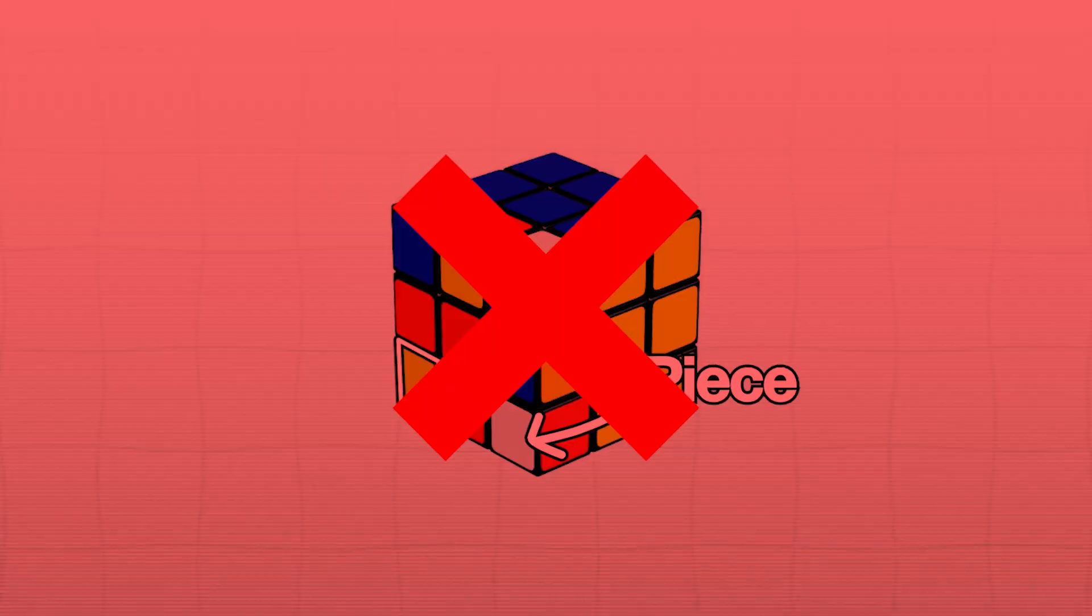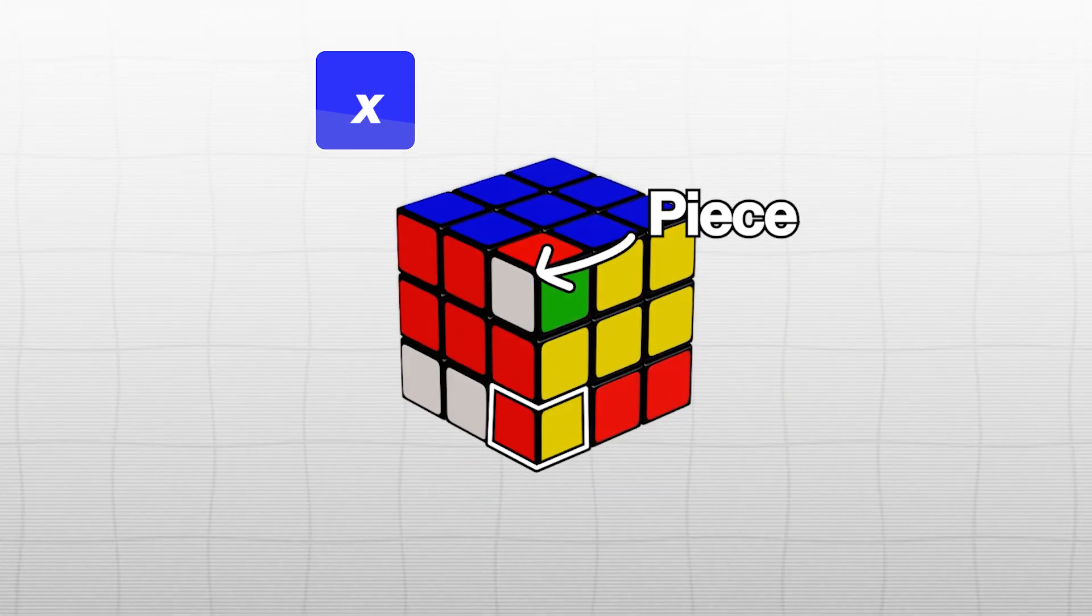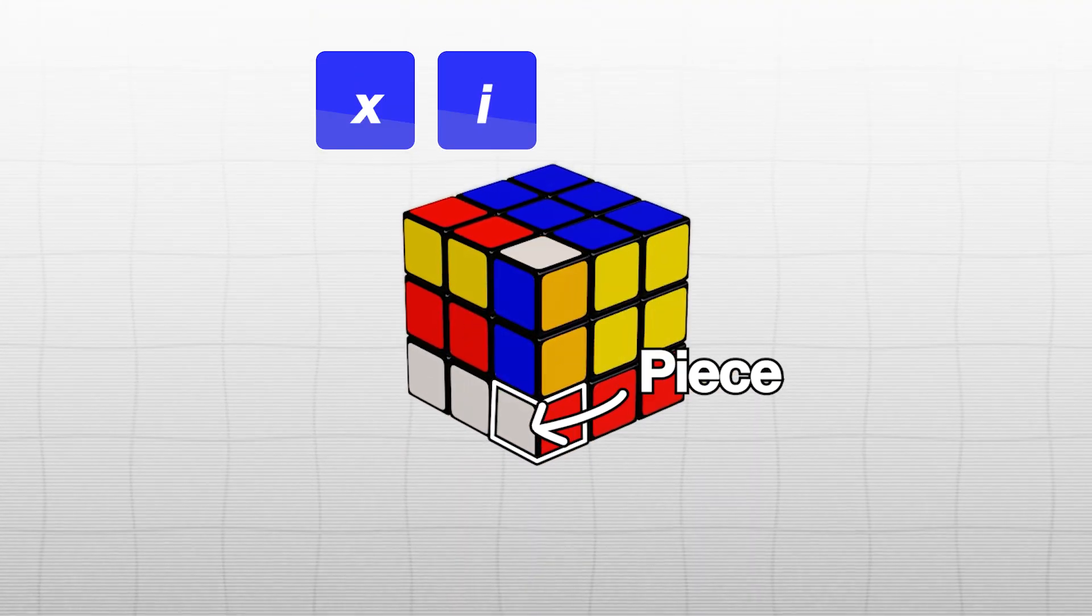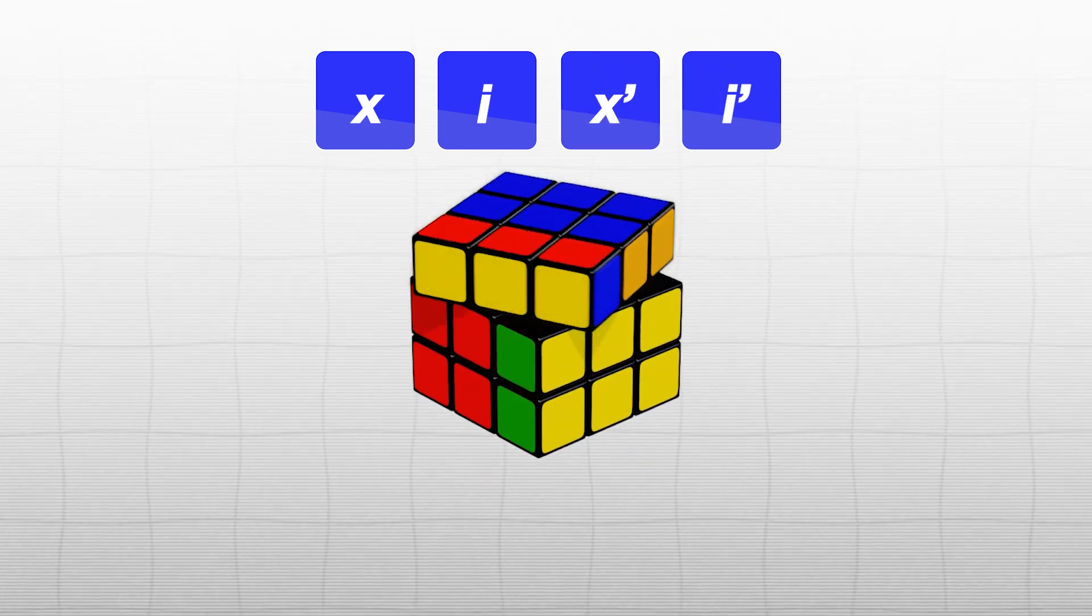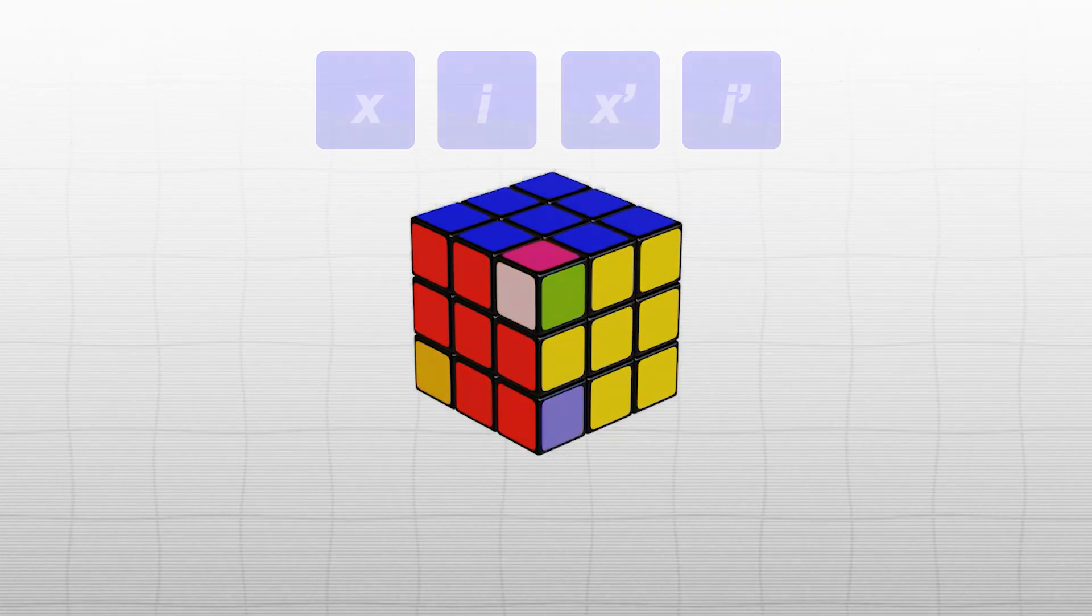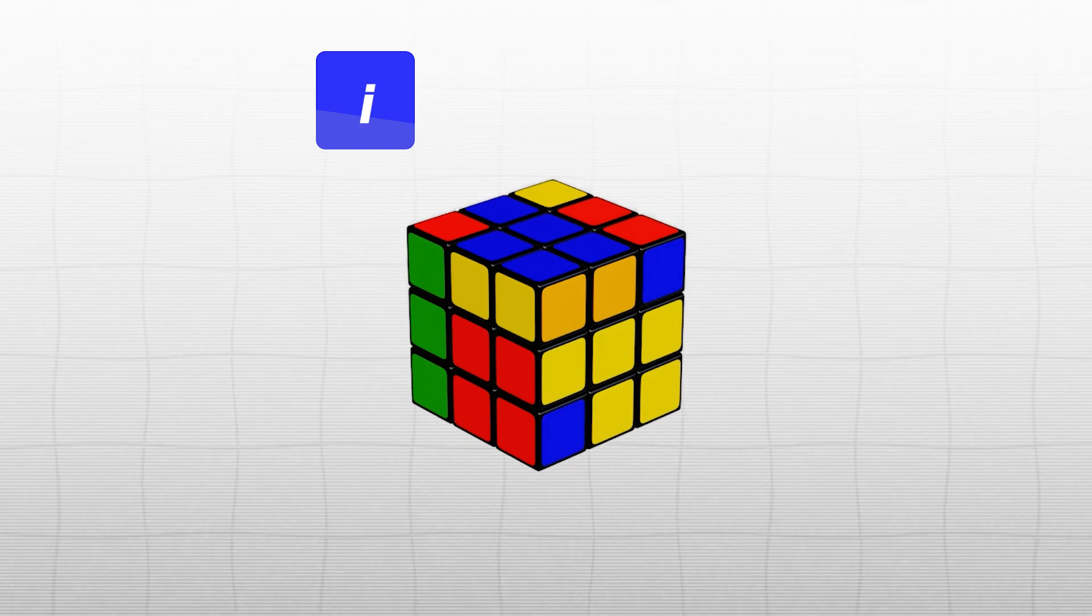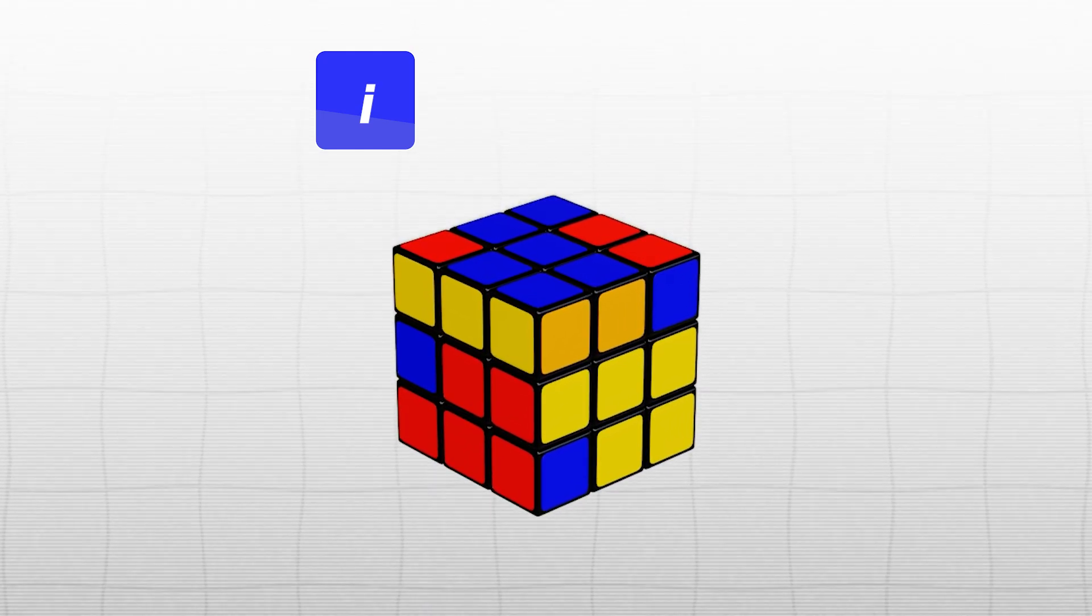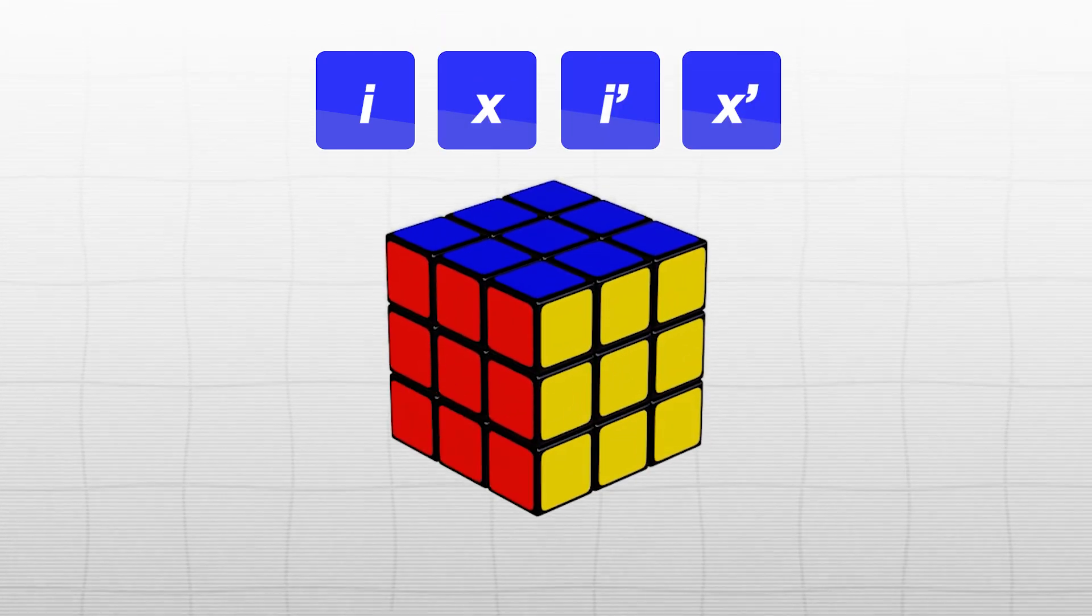But in this case, it doesn't, so you must do the exchange move first. And now you'll see that after doing the insertion, it does indeed go home. Also, keep in mind that if you do these three moves instead as the insertion, the order will swap around.